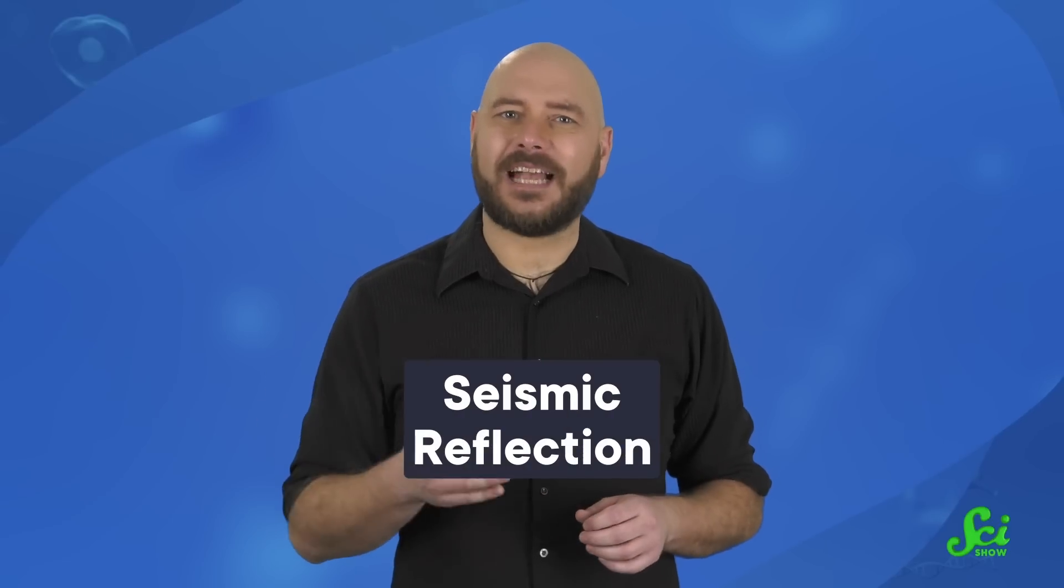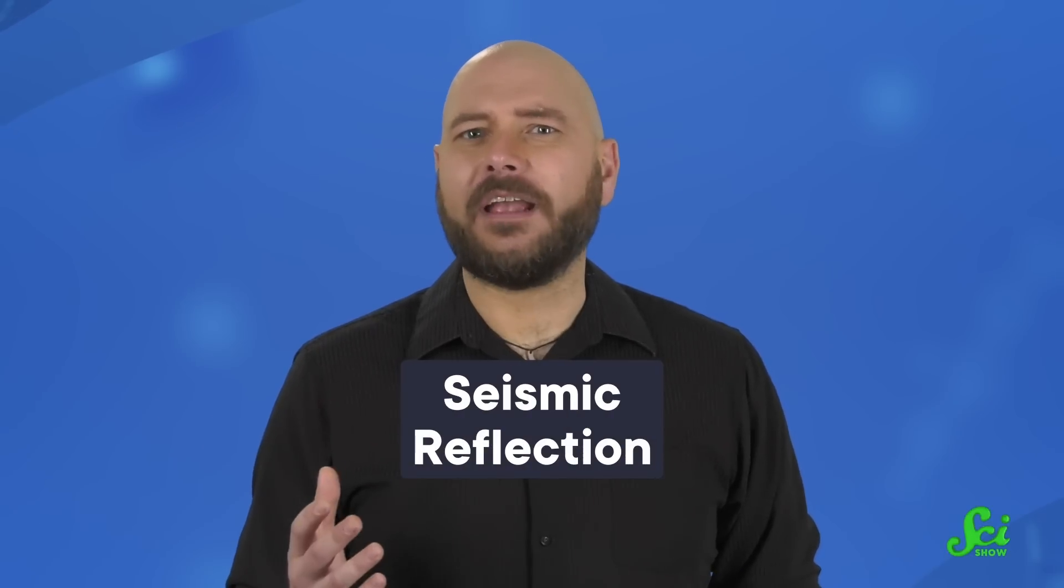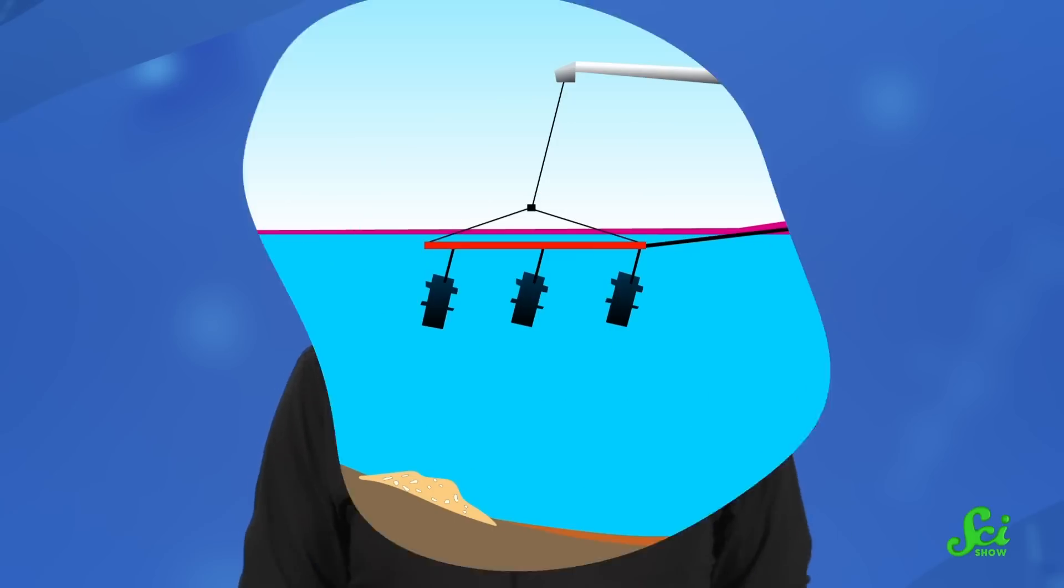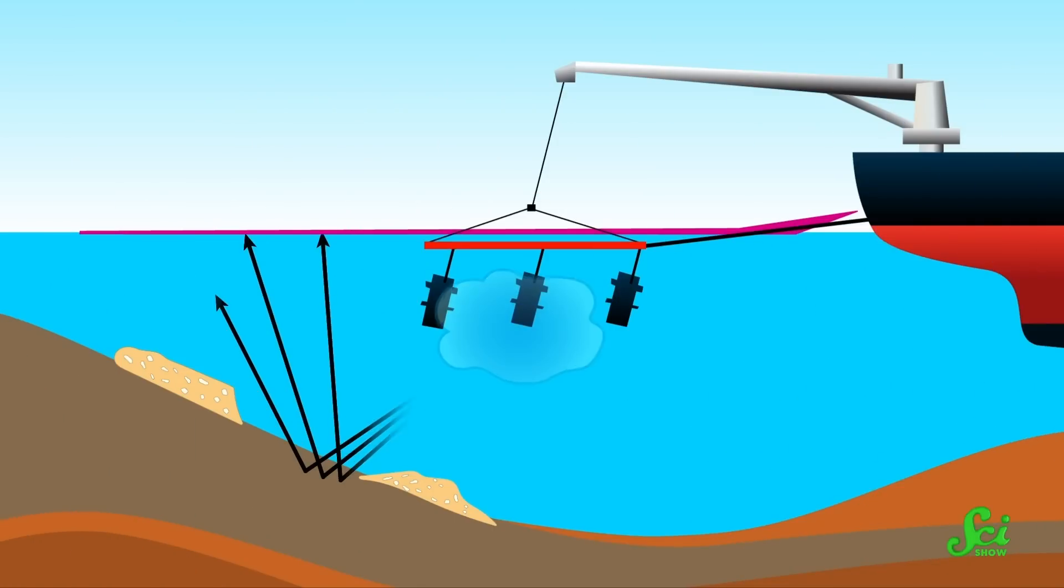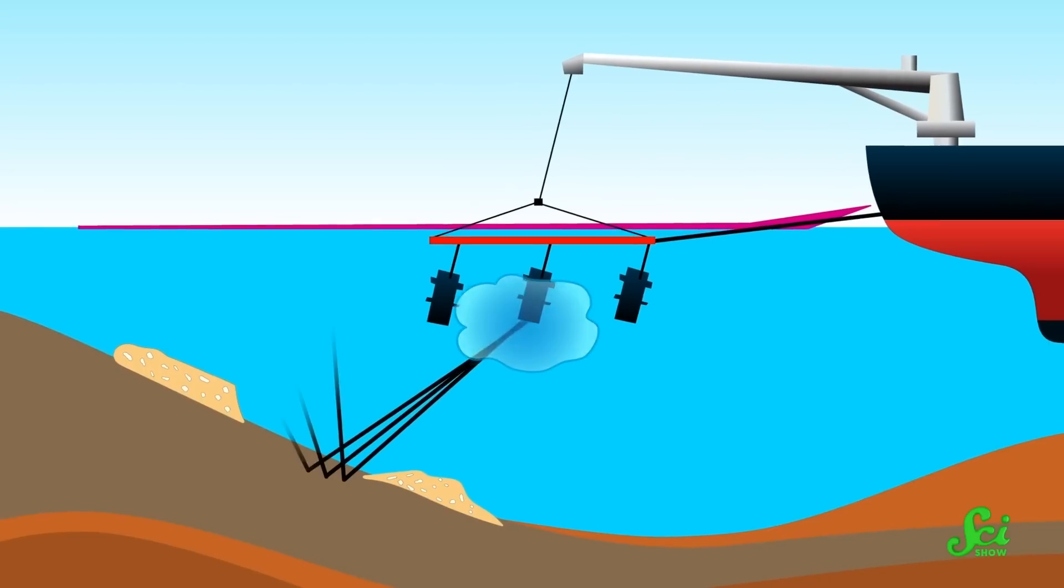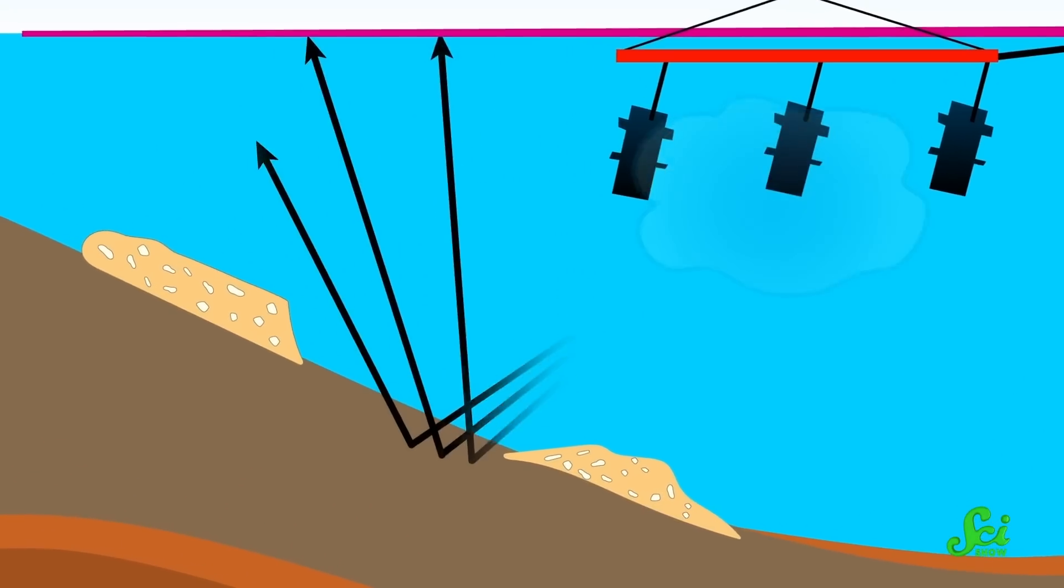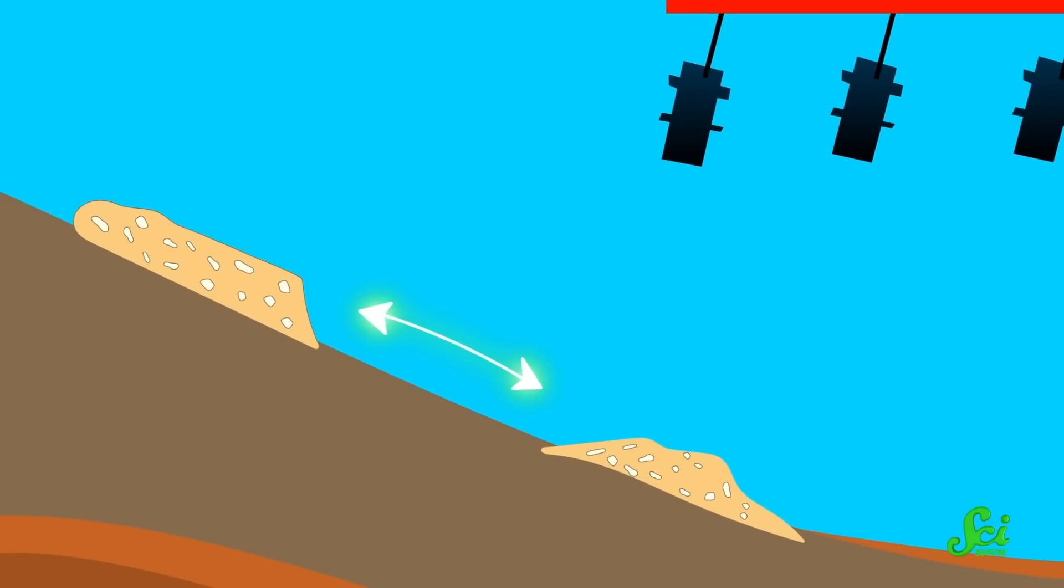One was from a technique called seismic reflection. This is a way of figuring out what rock layers exist under the surface without directly seeing them. Basically, you use a kind of gun to create seismic waves. Then, by measuring how these waves bend and change speed as they travel through different layers of sediment, you can figure out what those layers are made of. The team got this data from the area where a chunk of land had broken off during the slide.